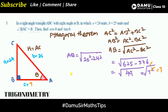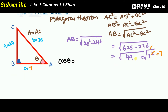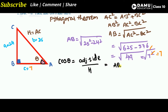Now we find cos theta. Cosine theta equals adjacent side divided by hypotenuse. For angle A, the adjacent side is AB and the hypotenuse is AC. So cos theta = AB/AC = 7/25.